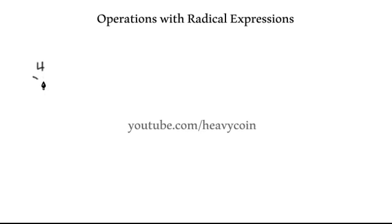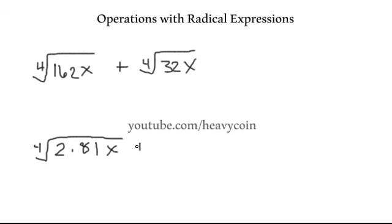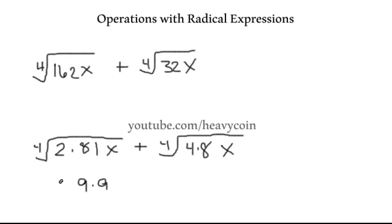Let's clear the board. Fourth root of 162x plus fourth root of 32x. We need to break 162 down — we know that 2 times 81 is 162. I'll put it in exponential form. We'll break 32 down: this is 8 times 4, and 81 can be broken down as 9 times 9.